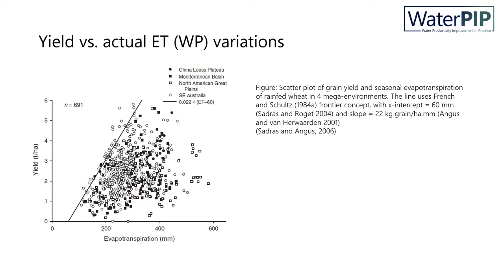Here you see a scatter plot of grain yield on the y-axis and seasonal evapotranspiration on the x-axis for rain-fed wheat in four mega environments. Even within the same environment, there is scatter and variation between the yield versus evapotranspiration of the same crop.